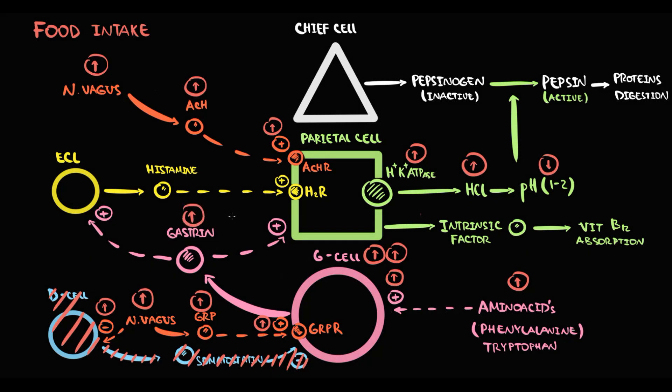Gastrin stimulates parietal cells and also stimulates enterochromaffin-like cells. Enterochromaffin-like cells, in response to this, increase the production of histamine that stimulates parietal cells. In response to stimulation, parietal cells increase the production of hydrochloric acid, and this makes intragastric pH even more acidic.